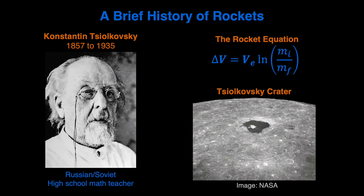In the way that the equation is written, the change in velocity that a rocket experiences — delta V — depends on VE, which is the velocity of the rocket exhaust, and the natural log of the ratio of the initial mass MI to the final mass MF. The difference between the initial mass and the final mass is the mass of the propellant. There is also a crater on the far side of the moon called Tsiolkowski Crater in his honor. The crater is filled with dark basaltic lava.